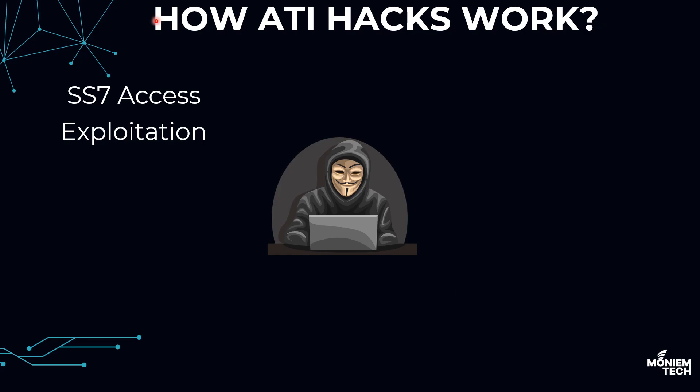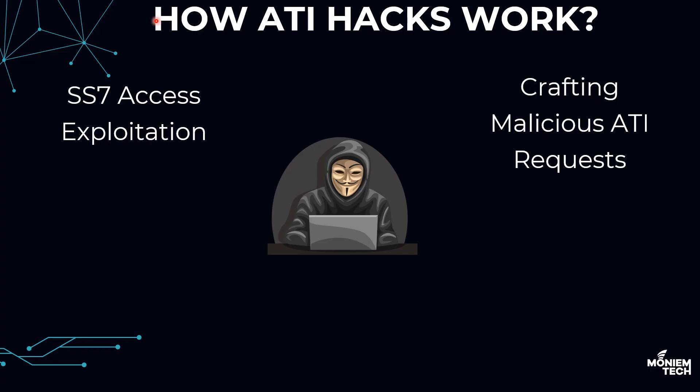In terms of how attacks work in SS7: first, the attacker gains unauthorized access to the SS7 network through a compromised telecom operator, third-party provider, or an insufficiently secured signaling gateway. Once on the SS7 network, the attacker sends fraudulent ATI requests to the HLR or HSS, depending on the generation. These requests mimic legitimate ones, often exploiting the lack of authentication mechanisms in SS7. The HLR, assuming the request is legitimate, responds with sensitive information such as Cell ID, roaming status, and VLR information, allowing the attacker to track the subscriber in real time.